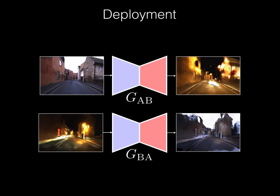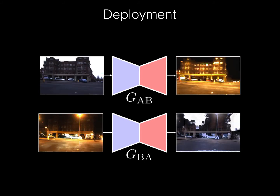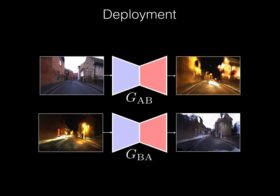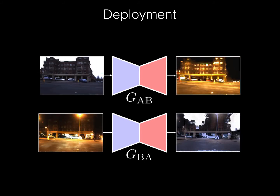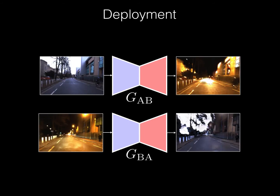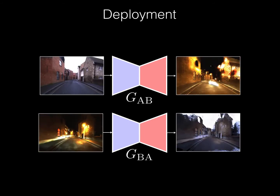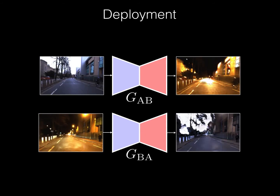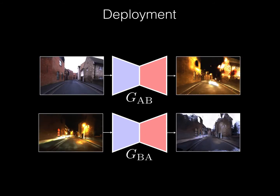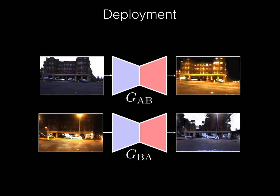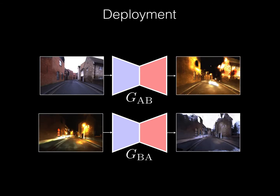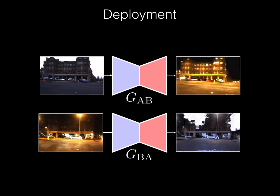At runtime, the learned generators produce images that are used to localize the robot against the previously built map using traditional sparse matching approaches. The generators run at approximately 3Hz for images with a resolution of 640x480 on an NVIDIA Titan X GPU.